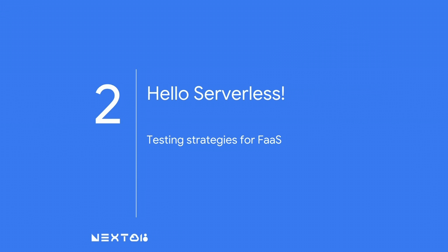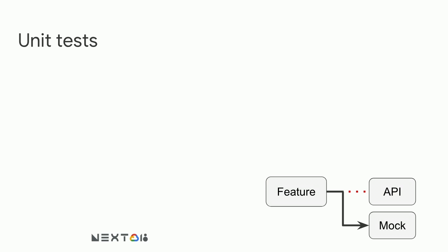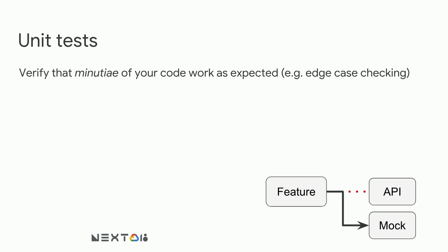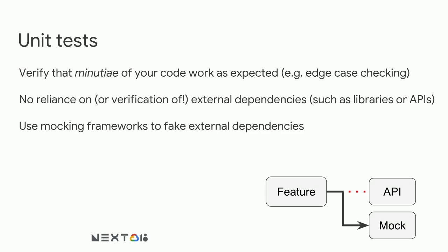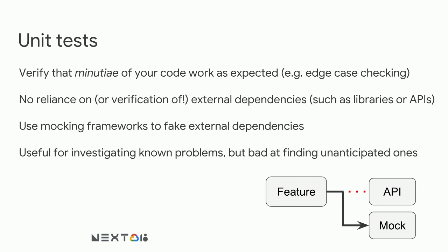Now applying this to the world of functions as a service. As a recap on unit tests: the core idea is to verify the individual units of your code work as expected — things like edge case checking. In a unit test, there is no reliance on or verification of external dependencies such as libraries, APIs, or cloud platforms. To get around this, we use mocking frameworks to fake those external dependencies. Unit tests are useful for investigating known problems and regressions, though not as good at finding unanticipated problems. They are faster to run and rarely use build resources — they're almost free to run.